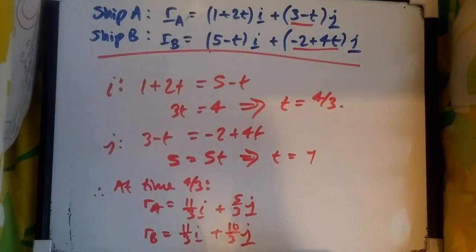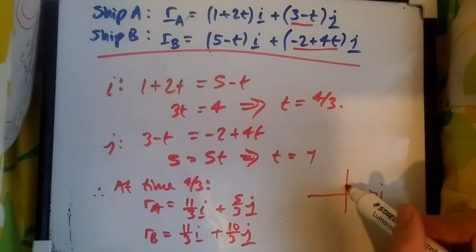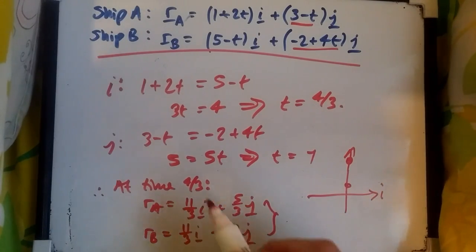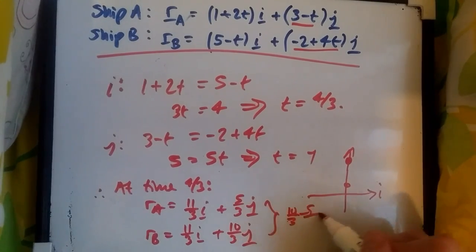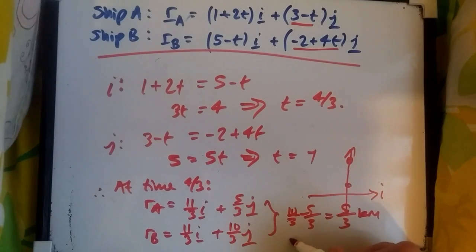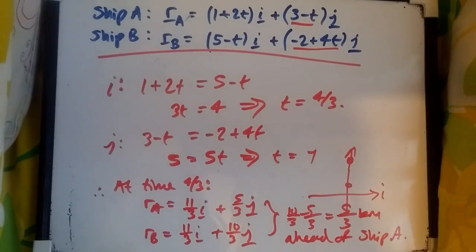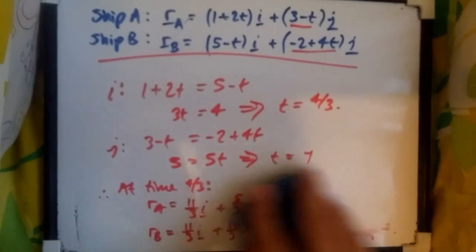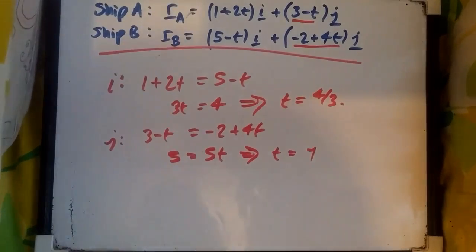Clearly, they're not in the same place. They might be in the same i-axis, but they're nowhere near the same j position because rA is probably somewhere here and B is somewhere there. Actually, at time 4/3, ship B is exactly 10/3 - 5/3 = 5/3, suppose kilometers, ahead of ship A. So this is actually one scenario. We could even rewrite this as ship B is due north of ship A by a distance of 5/3 kilometers.